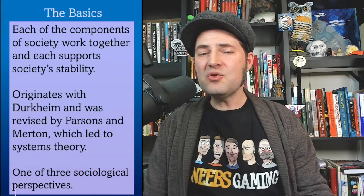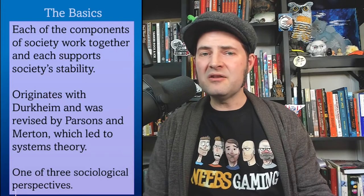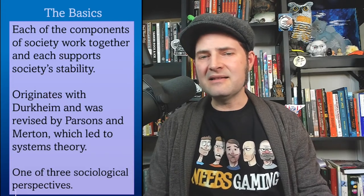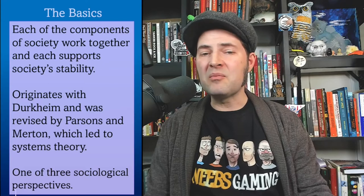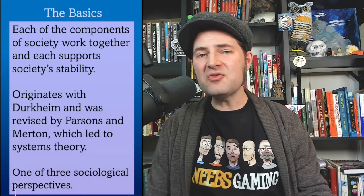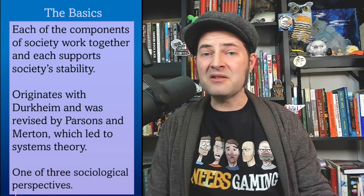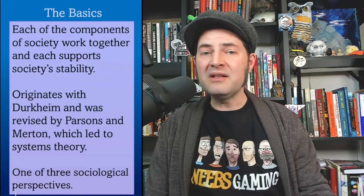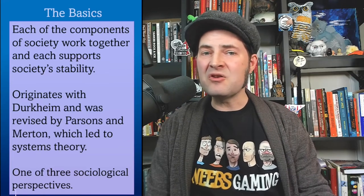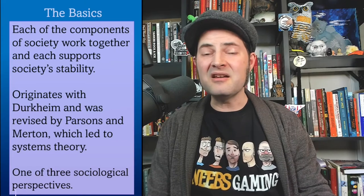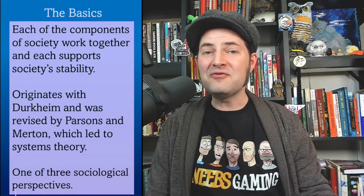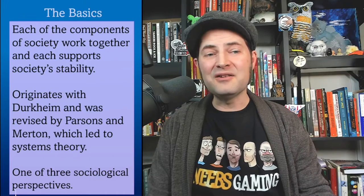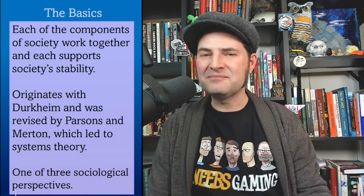Now, in the United States, two other sociologists would later take these ideas and adapt them: Talcott Parsons and Robert Merton, both still interested in the idea of what makes our society stable. Their work would lead to something called systems theory, which was basically a study of social organization — an entire field dedicated to this core idea of structural functionalism.